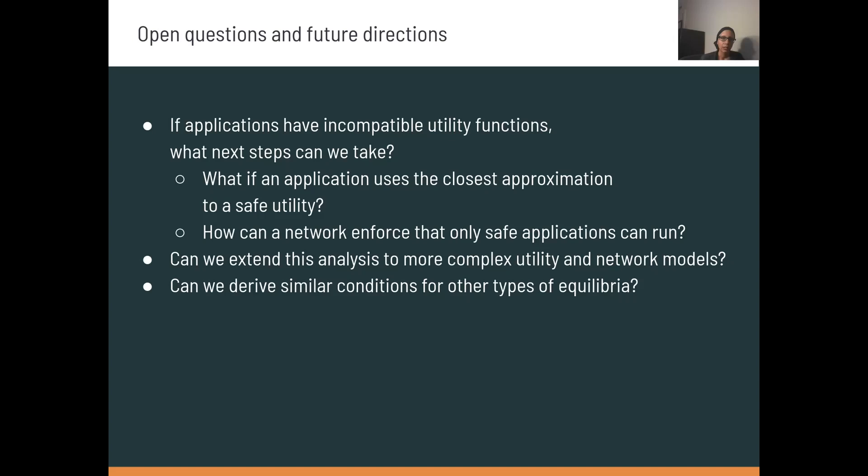This leaves us with a few open questions and some future directions. These are just a few questions that are raised by our analysis. Some of the questions have to do with regulation. What should we do if we determine that certain applications will not be able to coexist in a network? Some users may self-select out of our game and choose to use a different network if they see low utility. On the other hand, we might ask if there are policy or network-level enforcement decisions that one could make to try to enforce safe behavior in a network. We also analyzed a relatively simple model of the network and utility functions in this game, and it would be interesting to see whether our safety analysis techniques can be extended to more complex utility functions, network models, and potentially also other equilibrium concepts beyond the Nash equilibrium.